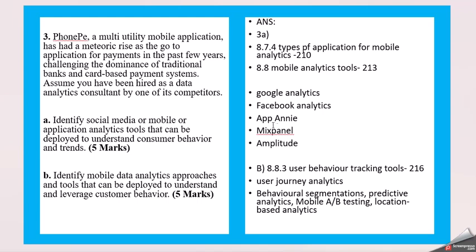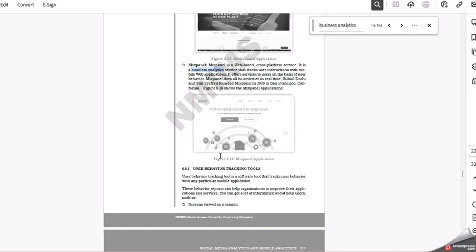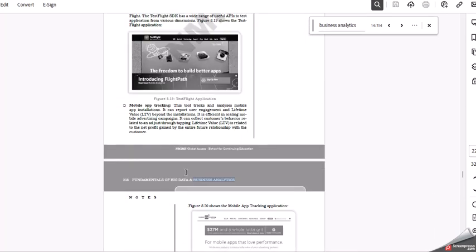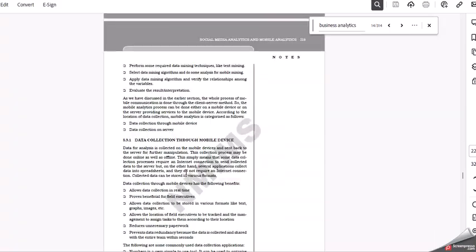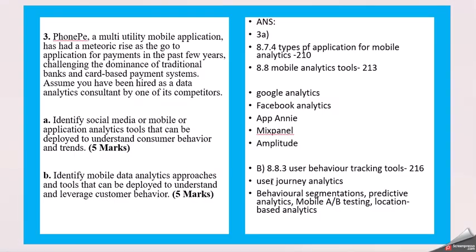And do keep in mind when you do the research please do not copy the content from the resources wherever you are looking for. Refer to it and write it in your own words. Then moving to 8.4 part B, section 8.8.3 user behavior tracking tools. Here you can capture some of the information where you have to come for 500 words. Again I have mentioned here where you can focus: user journey analytics, behavioral segmentation, predictive analytics, mobile A/B testing, location based analytics. You can easily achieve the 500 words.